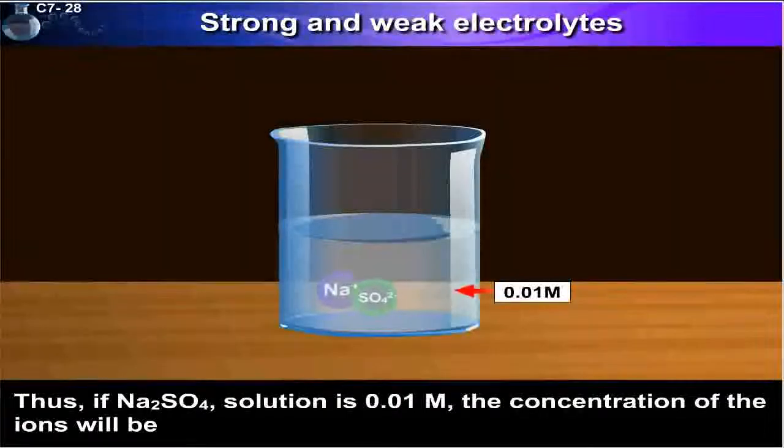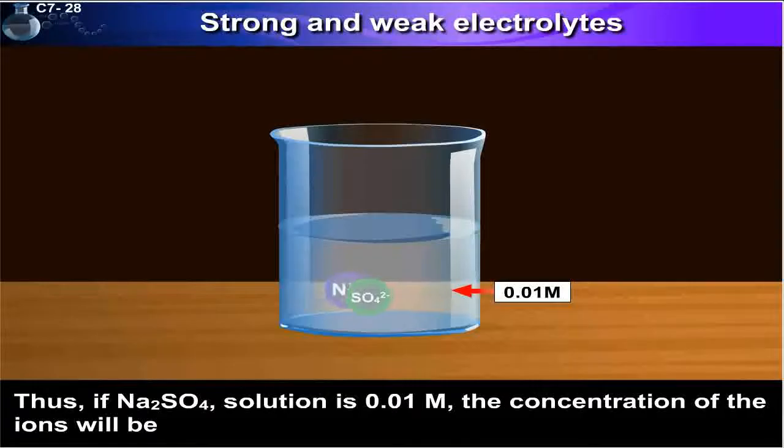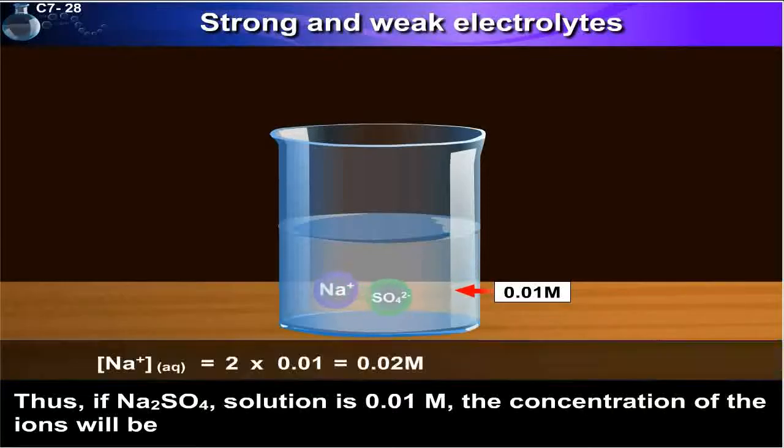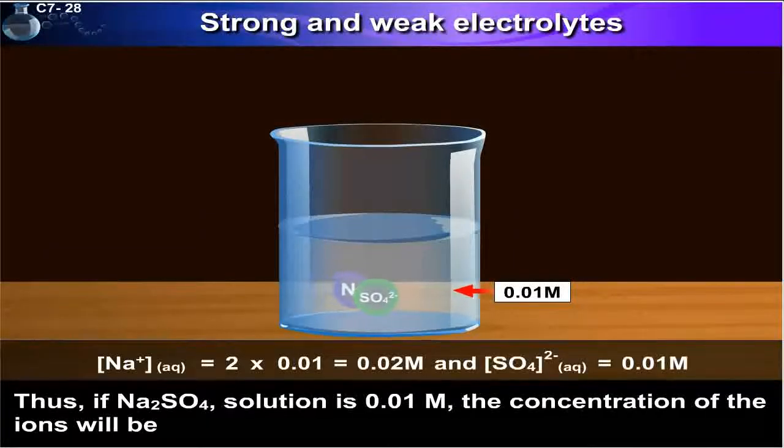Thus, if Na2SO4 solution is 0.01 moles, the concentration of the ions will be: for Na+ is equal to 2 into 0.01 which is equal to 0.02 moles, and for SO4^2- is equal to 0.01 moles.